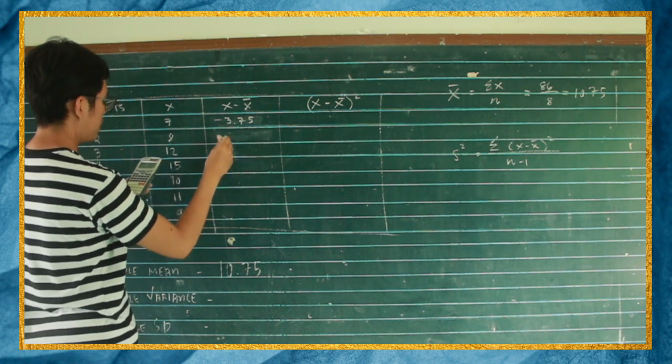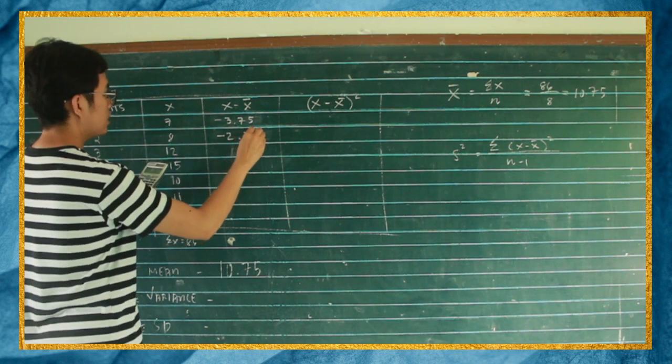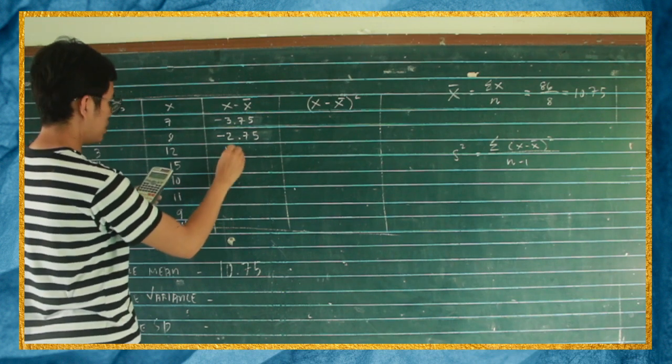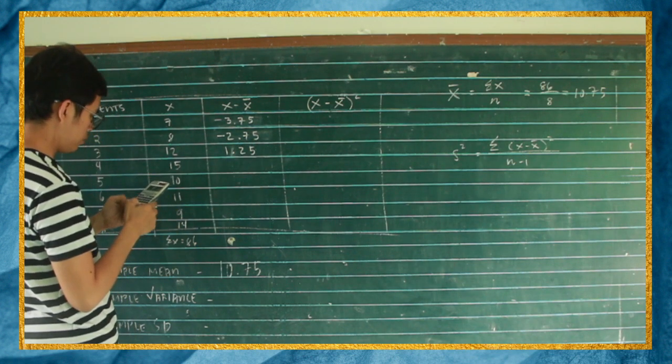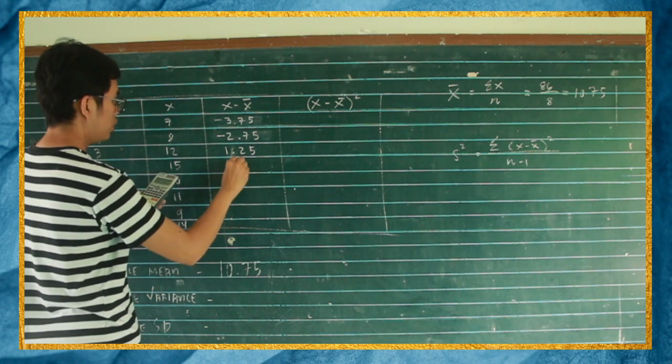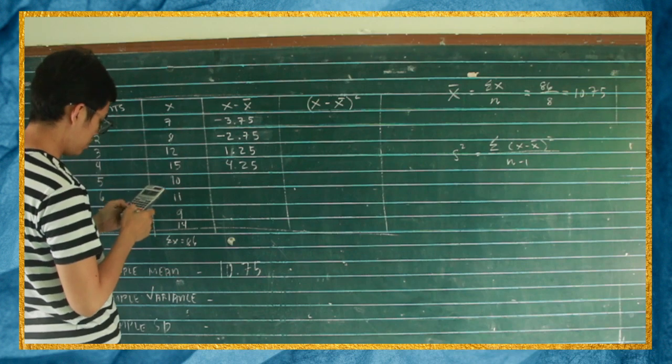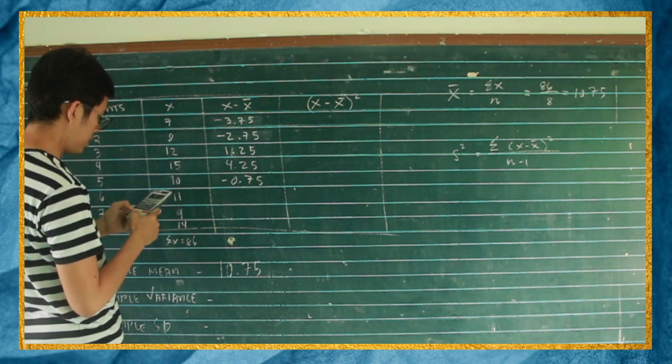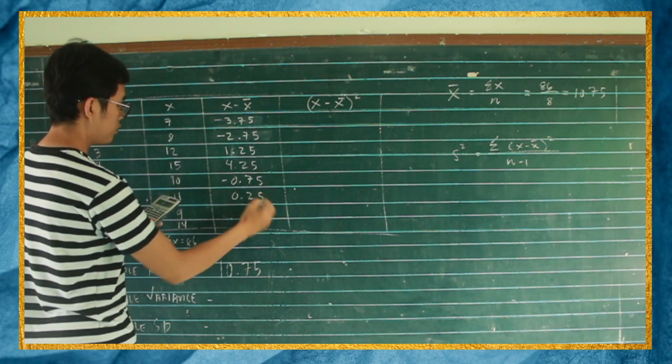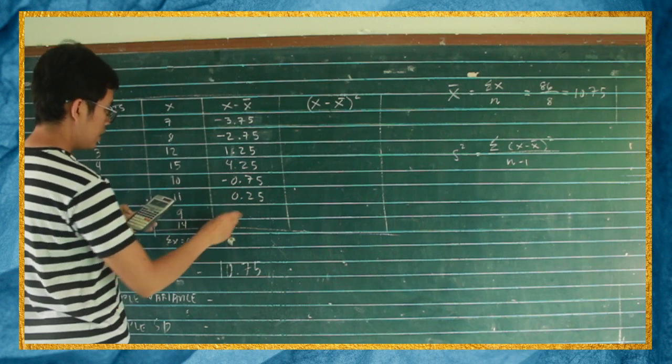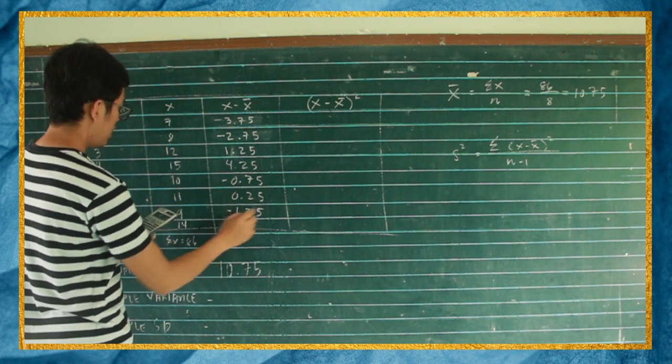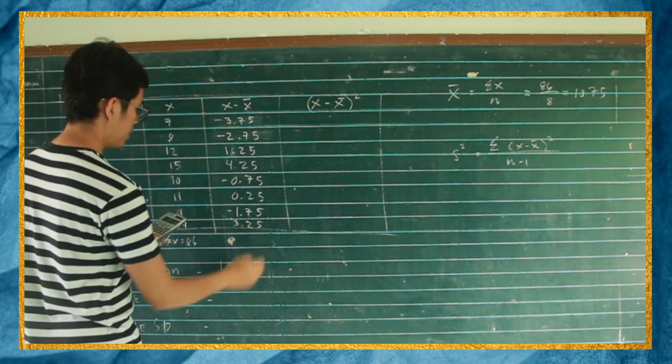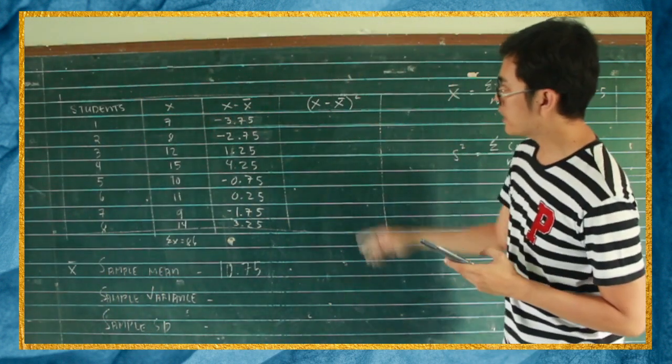So it's 2.75. Then 12 minus 10.75, so that is 1.25. And then 15 minus 10.75, the answer is 4.25. Then 10 minus 10.75, so the answer is negative 0.75. 11 minus 10.75, so that is 0.25. 9 minus 10.75, negative 1.75. And then 14 minus 10.75, so that is 4.25.